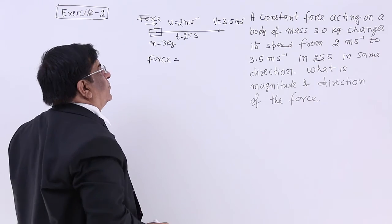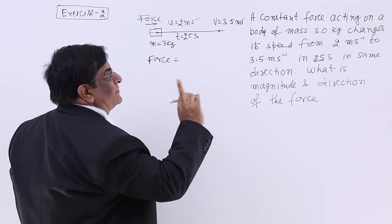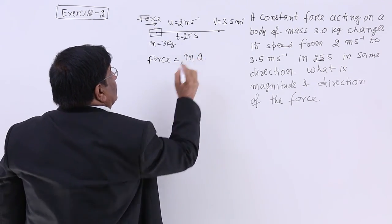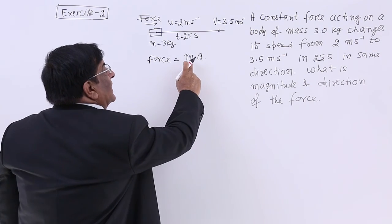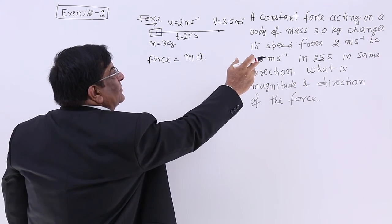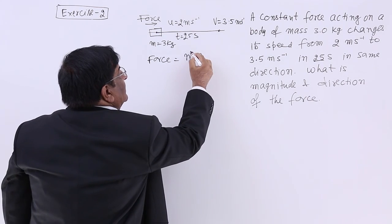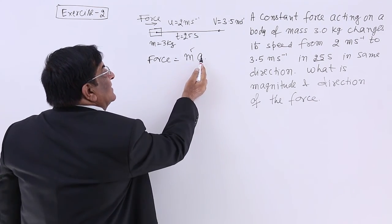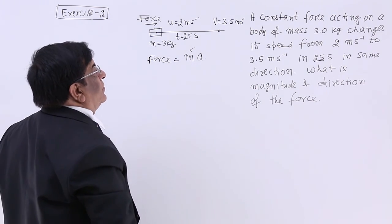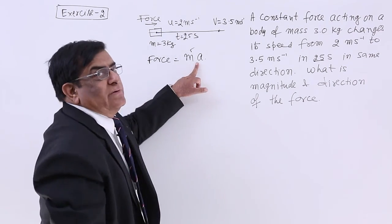Please see that force. For force we need two quantities: one is mass and one is acceleration. We try to find out whether it is given in the question. The mass is given as 3 kg but acceleration is not given. So now our target is to find out acceleration.